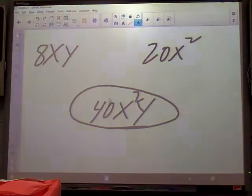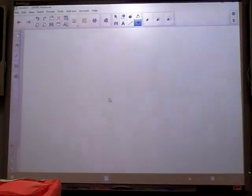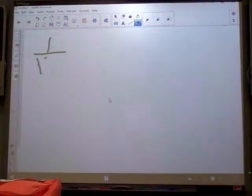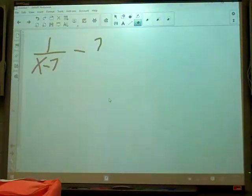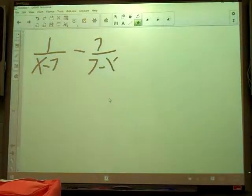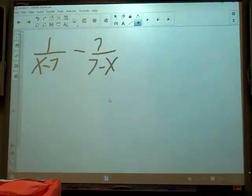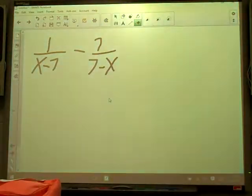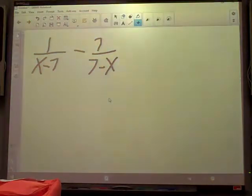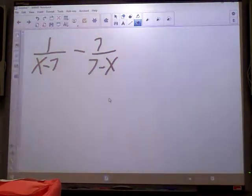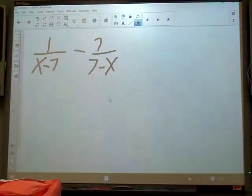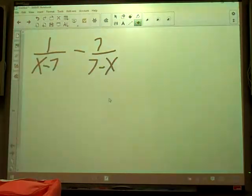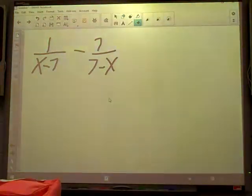Alright, on 7, we got some 7's in it. 1 over x minus 7 minus 7 over 7 minus x. It says add or subtract as indicated. So we're subtracting. When we add or subtract, you've got to have a common denominator. Does that problem have a common denominator? No. They're opposites. So if I can multiply one of those whole fractions by a negative 1, then they would be a common denominator, wouldn't they? Well, yes, they would.